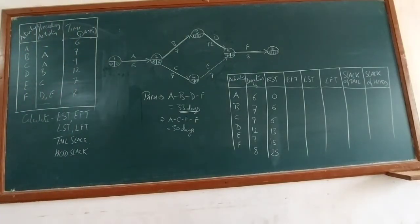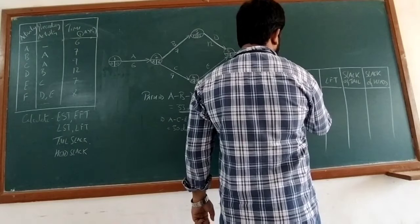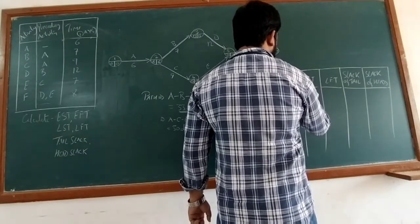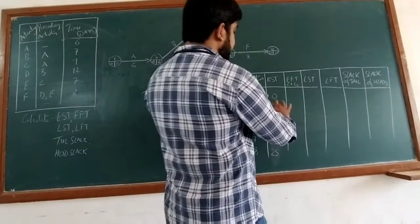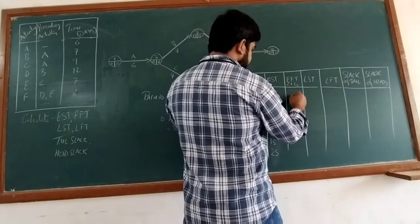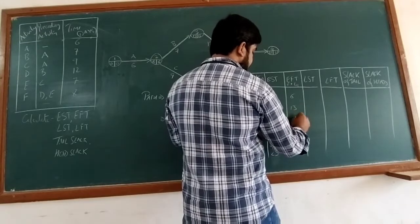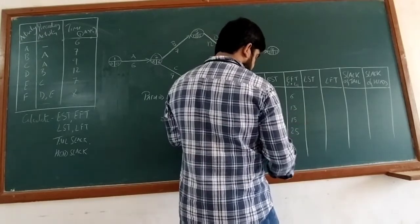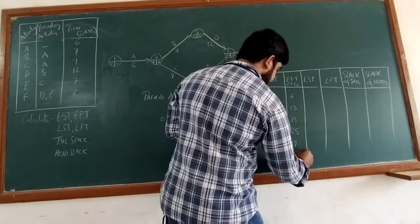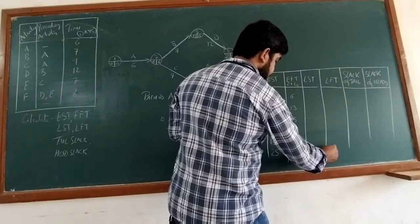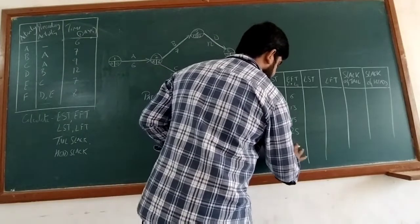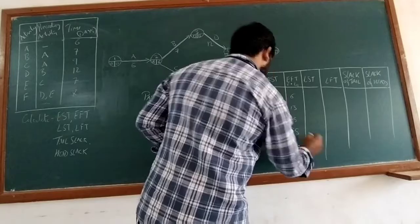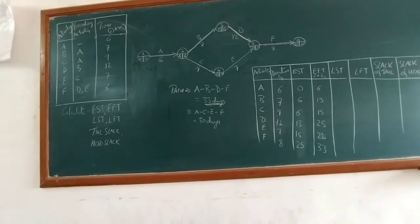The formula for EFT is: earliest start time plus time required to complete the activity. So: 0 plus 6 gives 6 for A; 6 plus 7 gives 13 for B; 6 plus 9 gives 15 for C; 13 plus 12 gives 25 for D; 15 plus 7 gives 22 for E; and 25 plus 8 gives 33 for F.